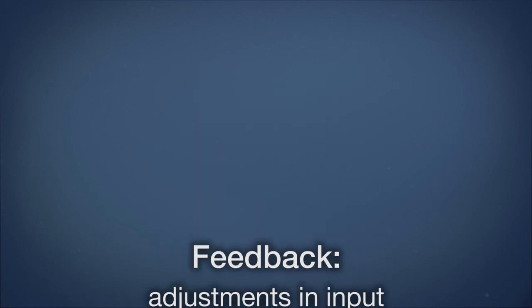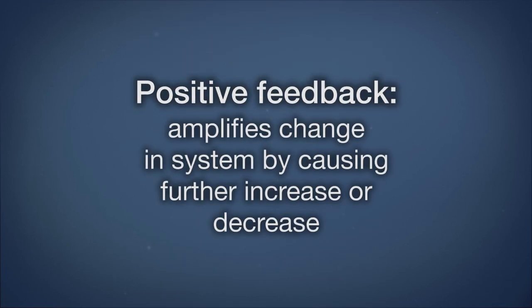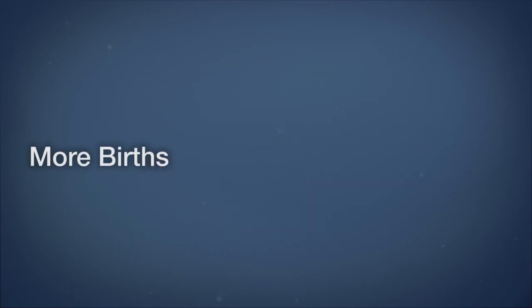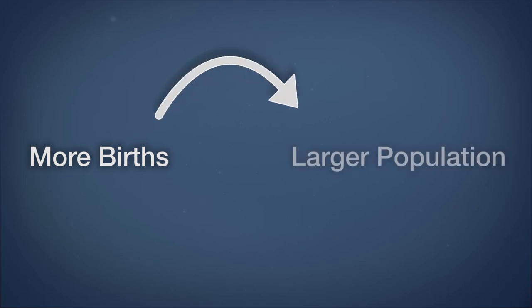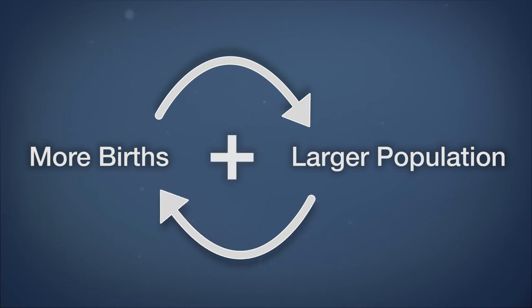There are two kinds of feedbacks. Positive feedback loops amplify the changes in a system. An increase causes a further increase, and a decrease causes a further decrease. In a population, more births in the population produce a larger population that will result in more births. That's a positive feedback.